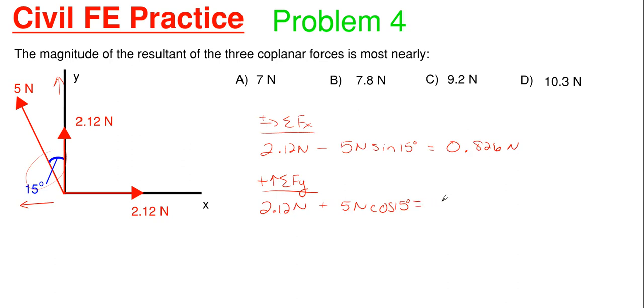So this pops out to be 6.95 Newtons, and then the resultant will just be the sum of these two squared, square rooted. So what we're going to have here is 0.826 squared plus 6.95 Newtons squared, and then square root it.